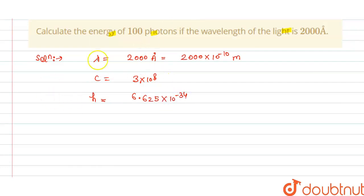So we have to calculate the energy of 100 photons. So total energy will equal to number of photons multiplied by energy of 1 photon.